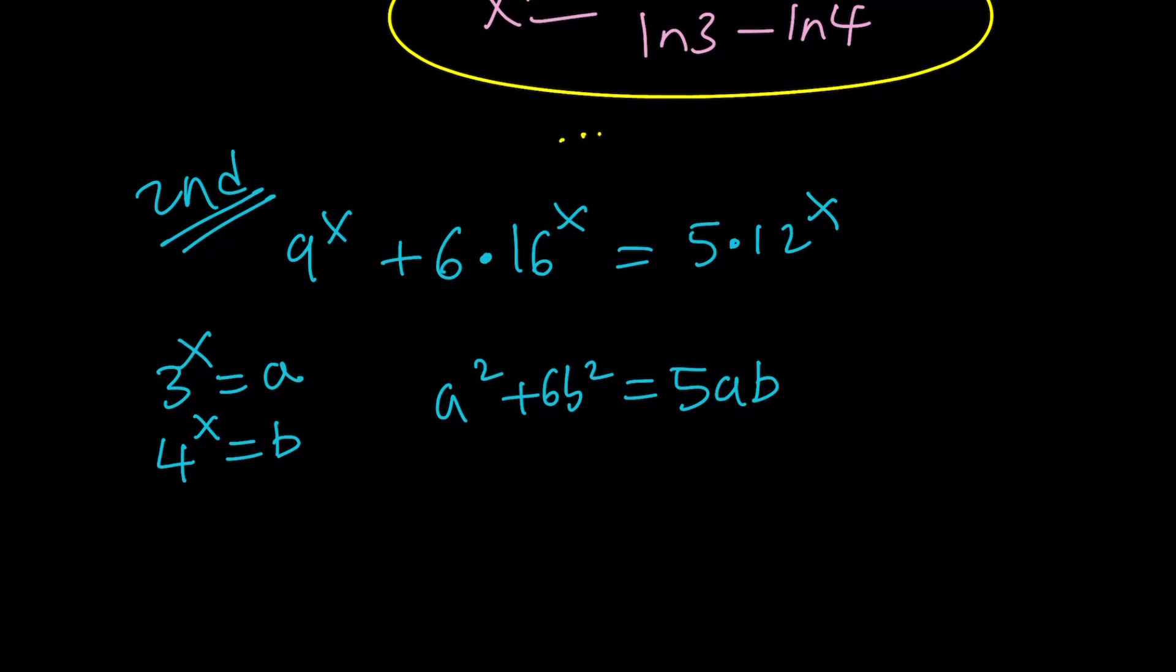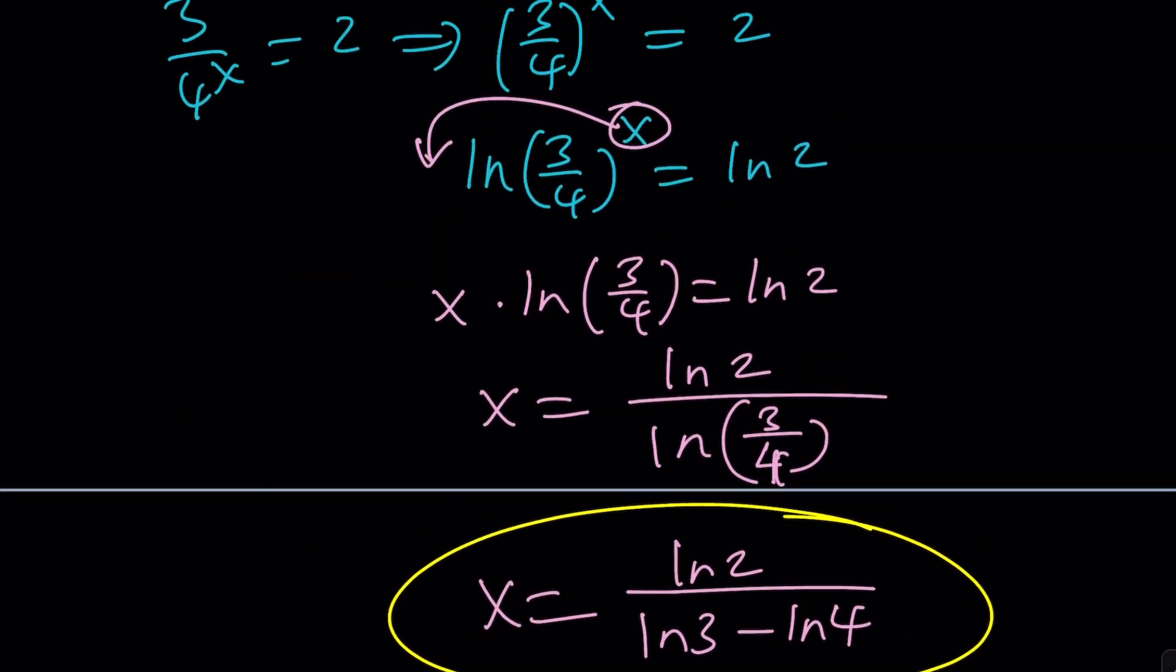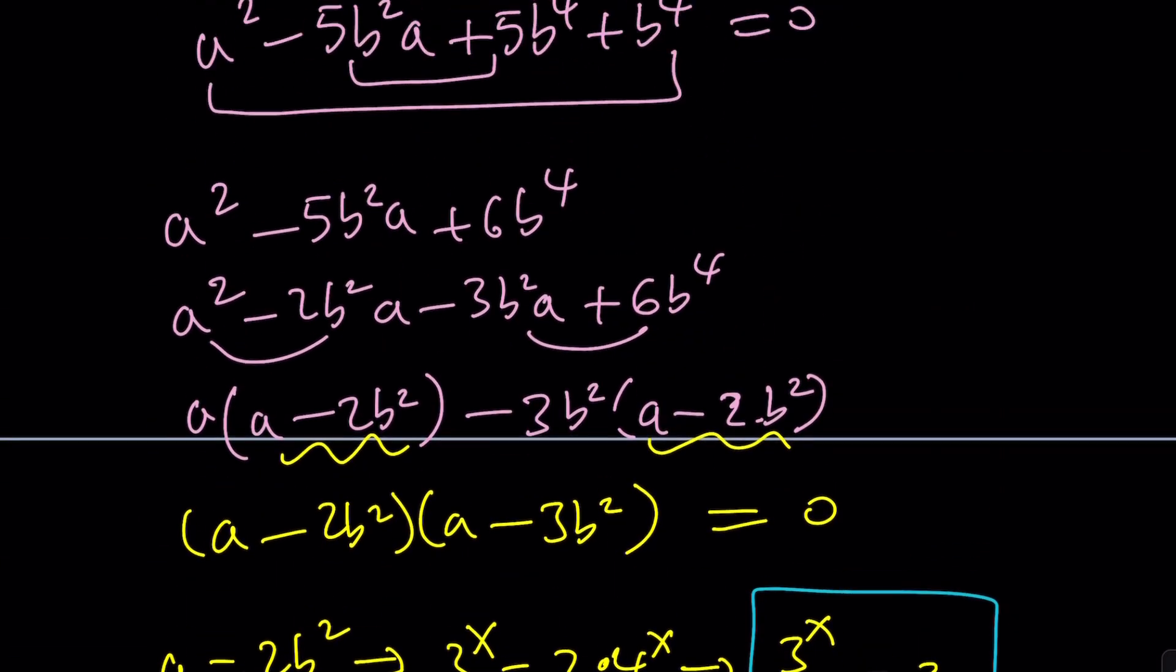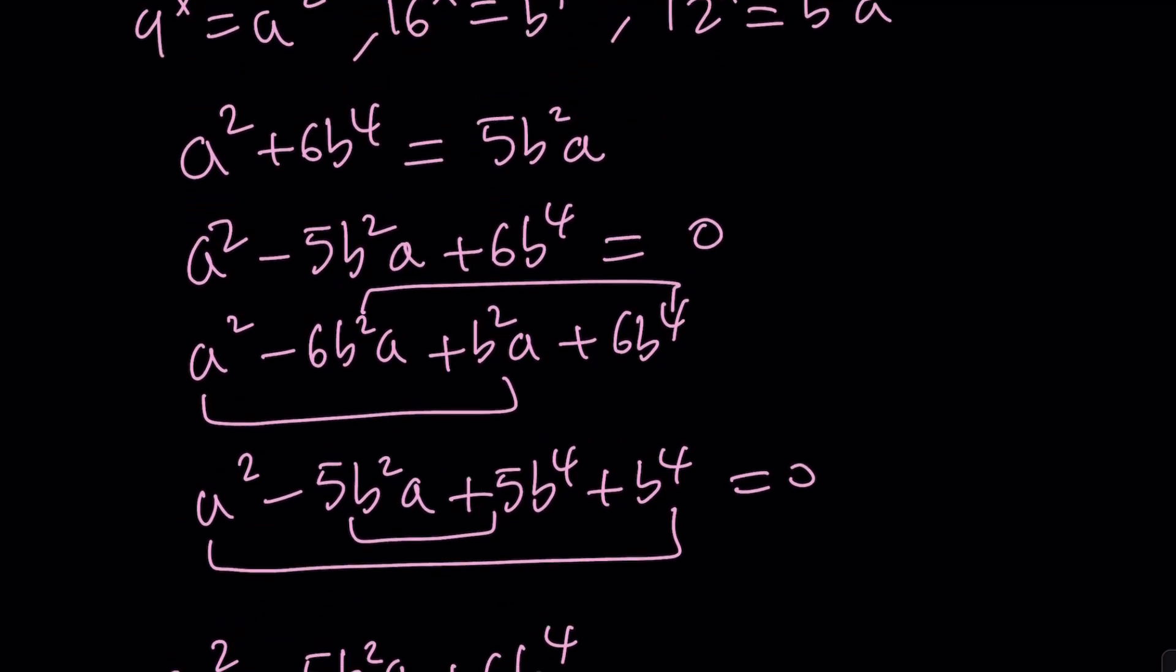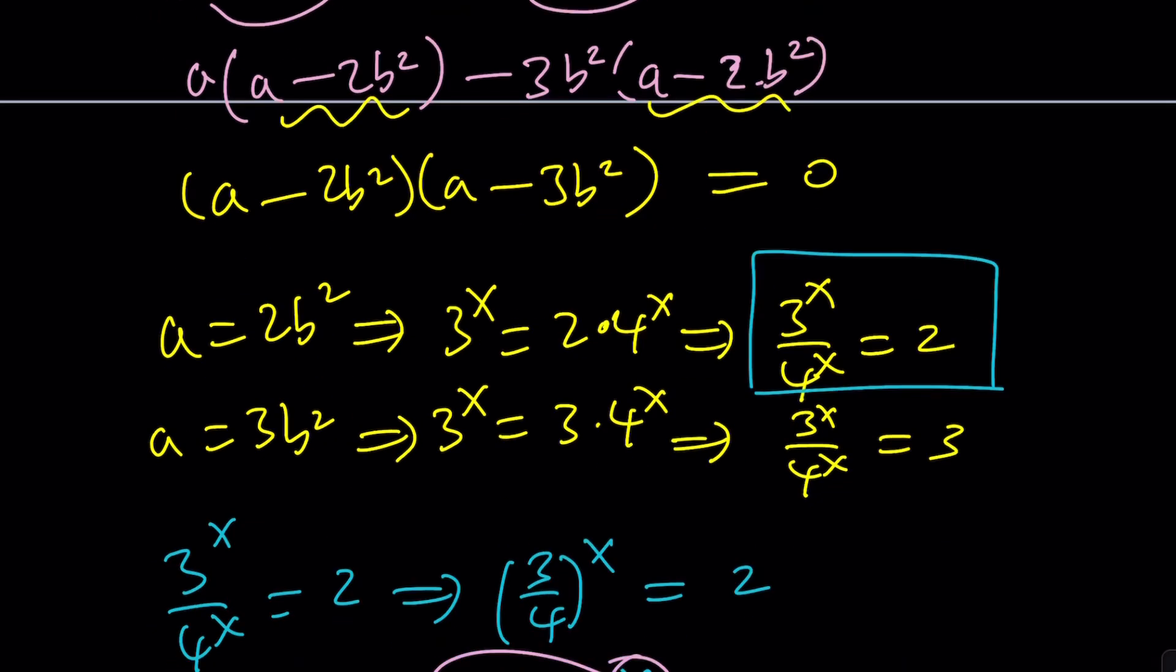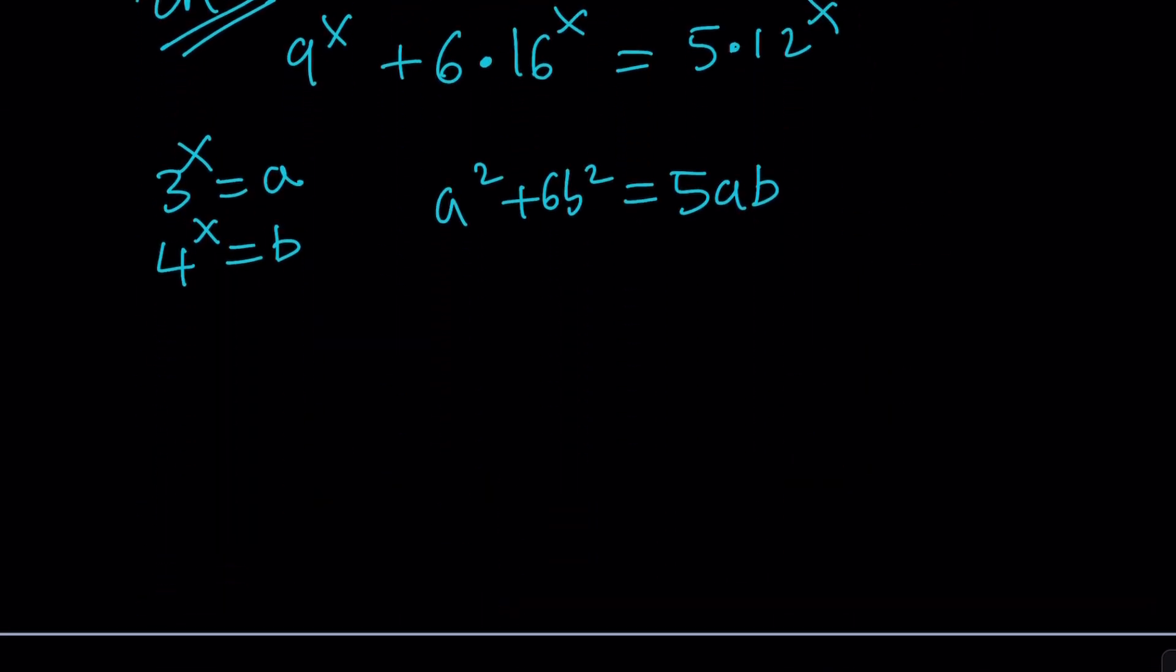Because I only have 4 powers of 4, not powers of 2 that are not powers of 4. When I do this, I'm getting a squared plus 6b squared equals 5ab, which is obviously much better. Let's put everything together.